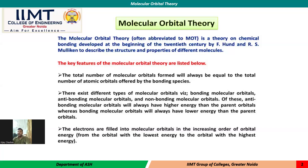Anti-bonding molecular orbitals will always have higher energy than the parent orbitals, whereas bonding molecular orbitals will always have lower energy than the parent atomic orbitals. The electrons are filled into molecular orbitals in the increasing order of orbital energy, i.e., according to Aufbau's principle, as well as Hund's principle, with pairing of electrons taking place when each orbital contains one electron.